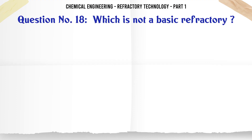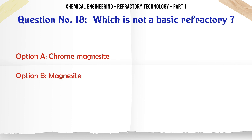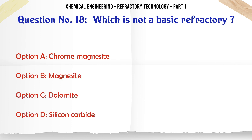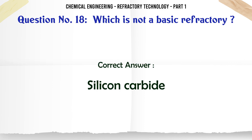Which is not a basic refractory? A. Chrom magnesite, B. Magnesite, C. Dolomite, D. Silicon carbide. The correct answer is Silicon carbide.